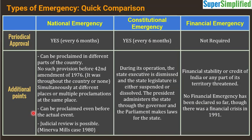Regarding periodic approval: once national emergency is proclaimed, it runs on its own — periodical approval from Parliament must be taken, and that is every six months. For constitutional emergency or President's Rule, Parliament's approval must also be taken every six months. For financial emergency, no such periodic approval is required. This difference between the three types is something you must remember.